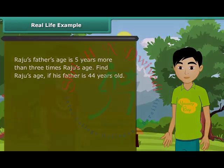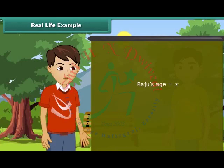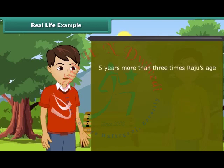Raju's father's age is 5 years more than 3 times Raju's age. Now find Raju's age if his father is 44 years old. We have to find Raju's age, therefore we will take it as X. Now 5 years more than 3 times Raju's age is 3X plus 5, which is equal to 44.